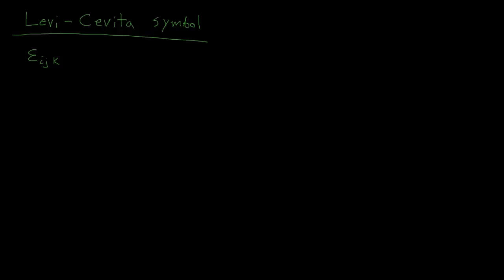So to define what this is, it's hard to write it as a simple bracketed expression, so let's start with one case. If i equals 1, j equals 2, and k equals 3 — so the indices go 1, 2, 3 — then the Levi-Civita symbol equals 1.